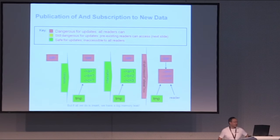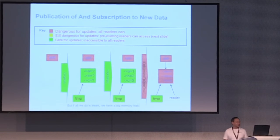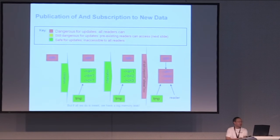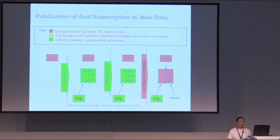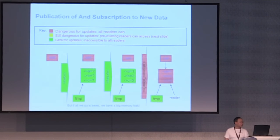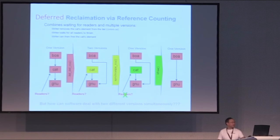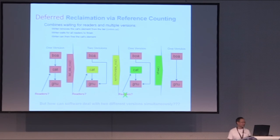The key difference from hazard pointers is that readers are identified with a range of code delimited by rcu_read_lock and rcu_read_unlock, rather than being associated with each individual object. In RCU, the lifecycle is the same: allocate, initialize, then call rcu_assign_pointer to make the pointer public. After that, readers may be there for any length of time without telling you about it. We remove the cat using C++ atomics to ensure readers see either the pointer to the cat or the pointer to the gnu — either way, a valid list.